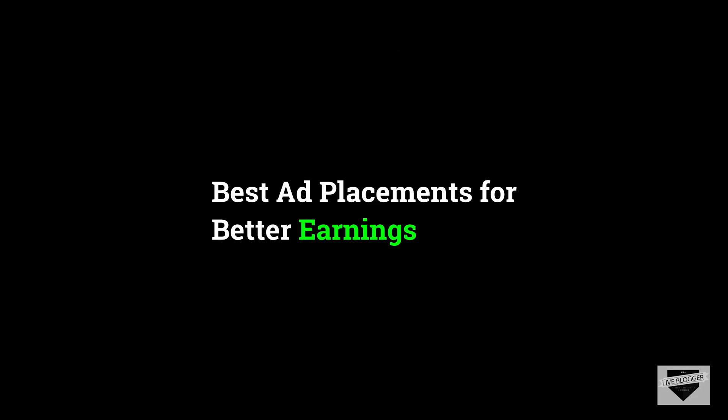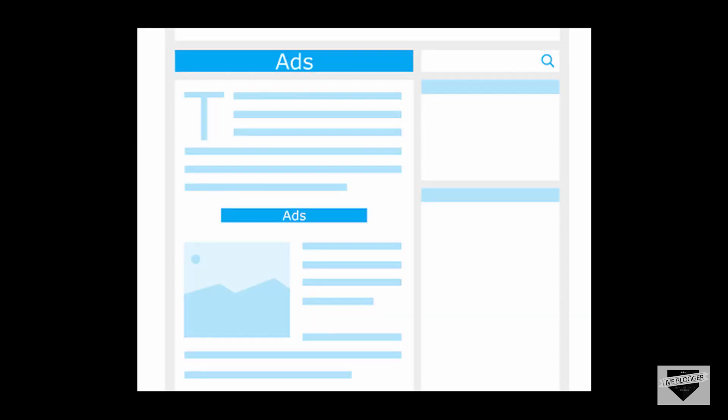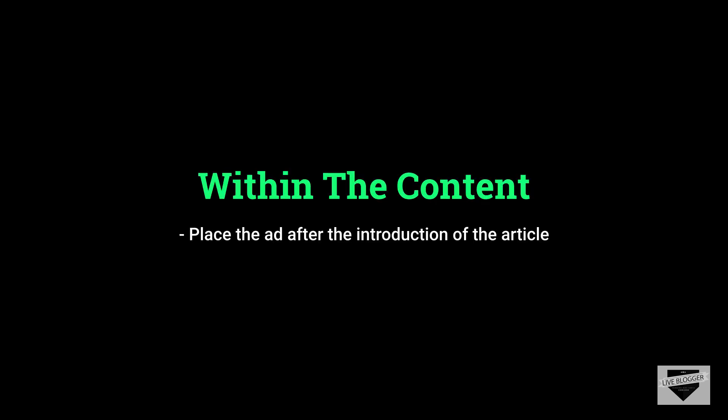Let me give you an idea of which areas on your website can help you earn more using AdSense ads. One of the best places to place your AdSense ads is within the articles. For example, if you have a post on your website, you can place your ad right after the introduction or the first or second paragraph. When the visitor reads the article, they will notice the ad between the paragraphs and it is more likely to be clicked.